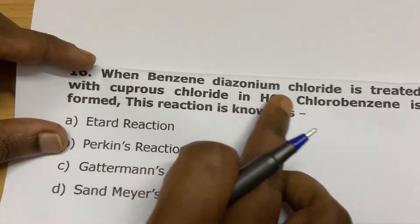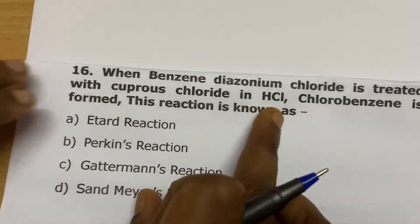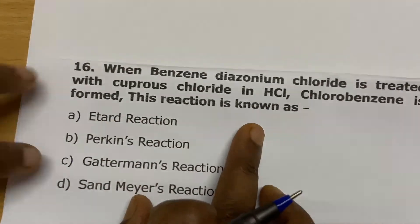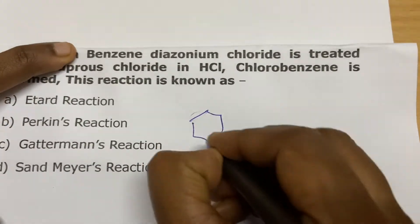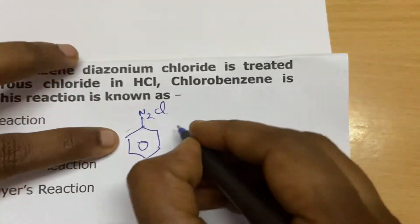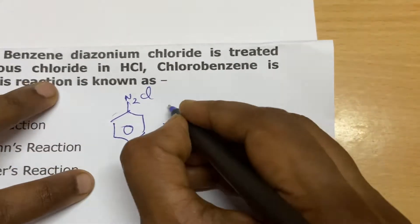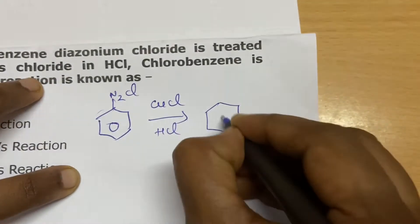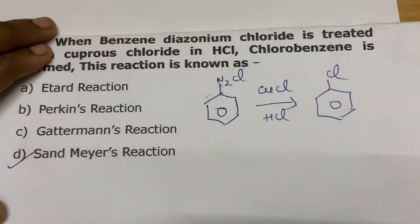When benzene diazonium chloride is treated with cuprous chloride in HCl, chlorobenzene is formed. This reaction is known as Sandmeyer's reaction. Benzene diazonium chloride has the group N2Cl and is prepared from aniline. When you add copper chloride and HCl, you get chlorine — so this is Sandmeyer's reaction.